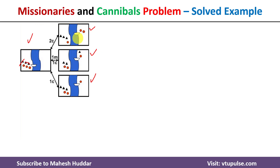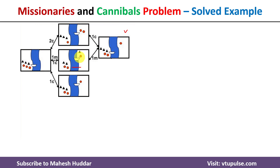We will explore one of the possibilities. The boat is on the right side, so it can carry one cannibal back to the left side. However, bringing that cannibal back would result in three cannibals and two missionaries on the left, which violates the constraint. Instead, we bring one missionary back to the left, giving three missionaries and two cannibals on the left and one cannibal on the right. From this state, we can only bring one cannibal or one missionary to the left side; all other moves violate the constraint.